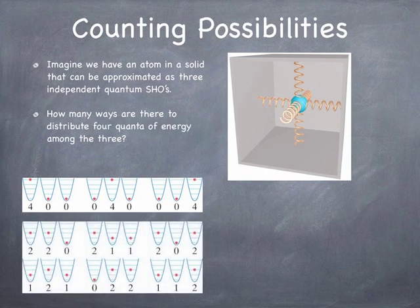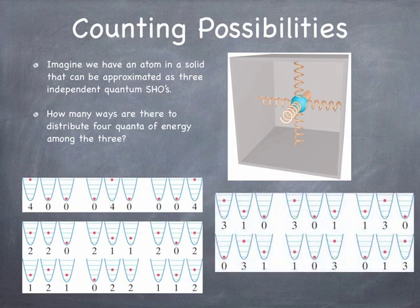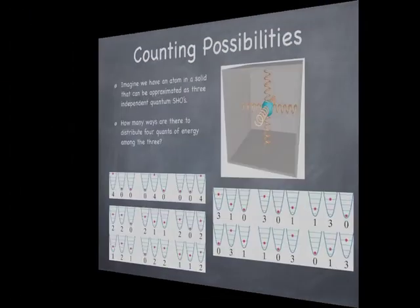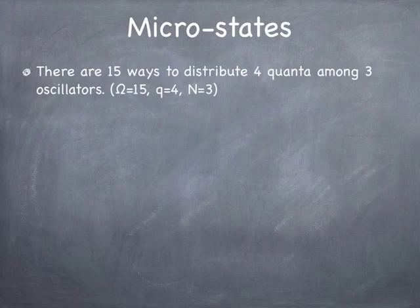You could also distribute two in x, two in y, and zero in z, and so on. There are six different ways to store two in one and two in another, or two in one and one each in the other two. And there are six ways for three in one direction and one in another. Altogether: six plus six plus three equals 15 possible ways to distribute four quanta among three oscillators.